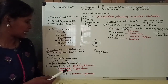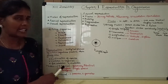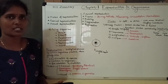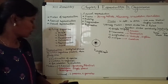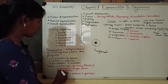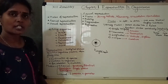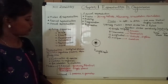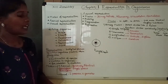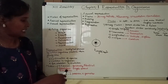Regarding asexual reproduction: it is uniparental. Genetically identical offspring are produced and there is no variation — that is one important point. The offspring are genetically identical to the parent.